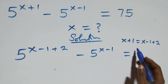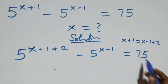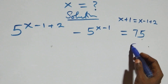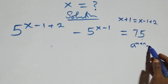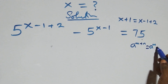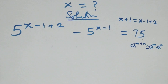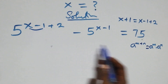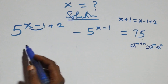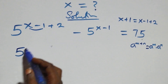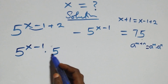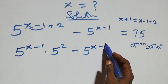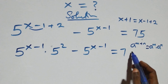We apply the law of indices: a raised to the power m plus n is the same as a raised to the power m times a raised to the power n. Treating x minus one as m and two as n, we write this as 5 raised to the power x minus one times 5 squared, minus 5 raised to the power x minus one, equals 75.